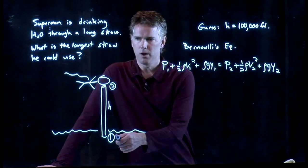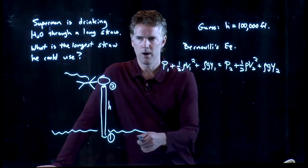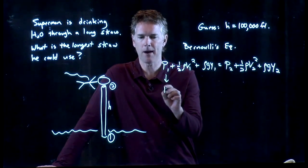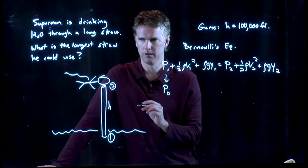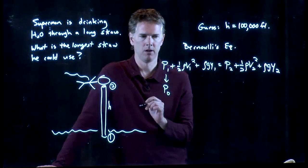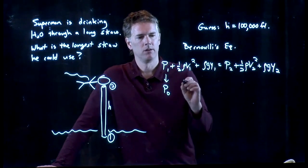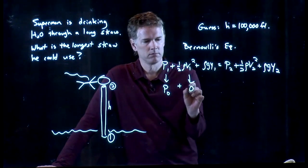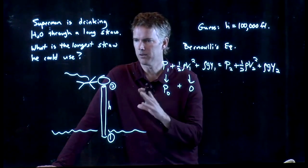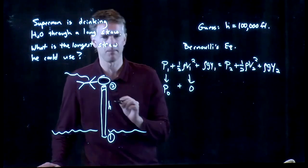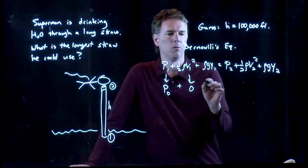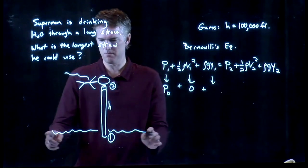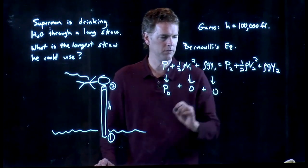What is P1? Well, we're at the surface of the ocean, so P1 is atmospheric pressure, which we're calling P0. Okay, one atmosphere. What is V1? Well, that stuff's not really moving. We can say it's zero, right? We'll pick the static case where he just gets the liquid to the top. What about Y1? Well, let's measure from the surface of the ocean, so that's zero.